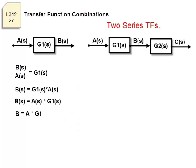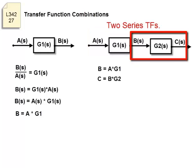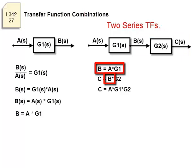Here we have two series transfer functions. Can they be combined into one transfer function? B is A multiplied by G1. C is B multiplied by G2. Eliminate B from those two equations. And C divided by A is G1 multiplied by G2.